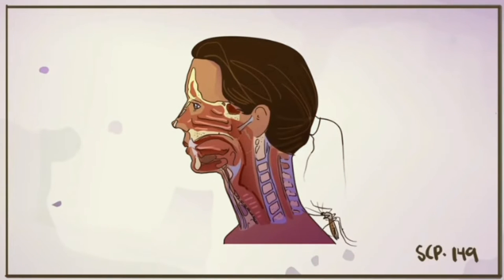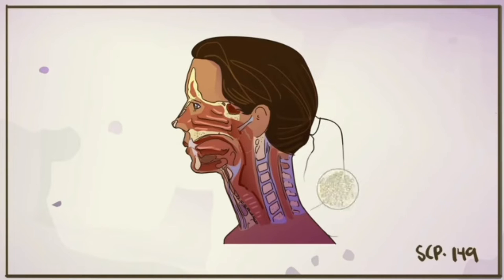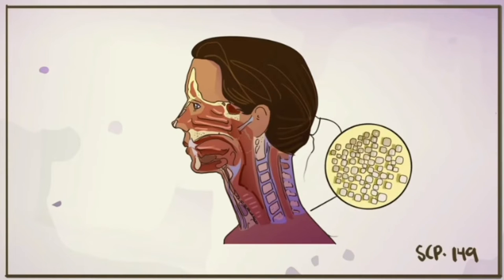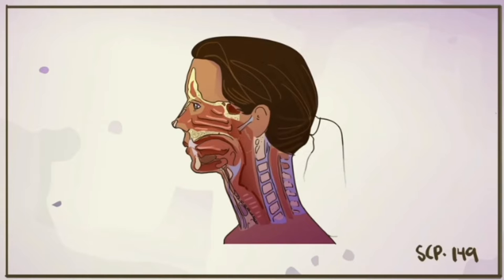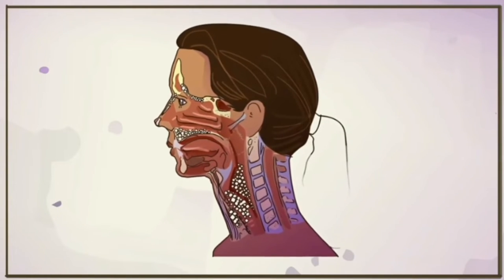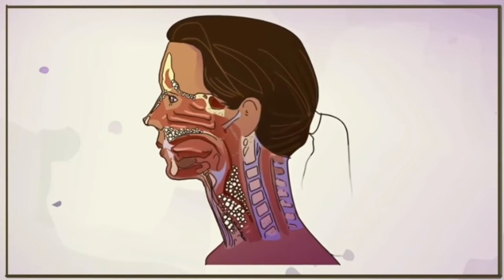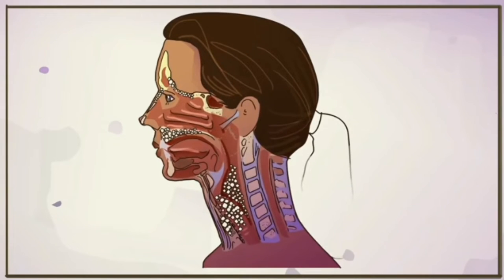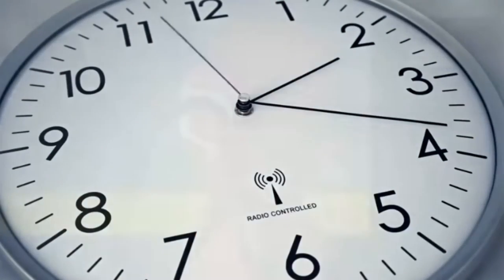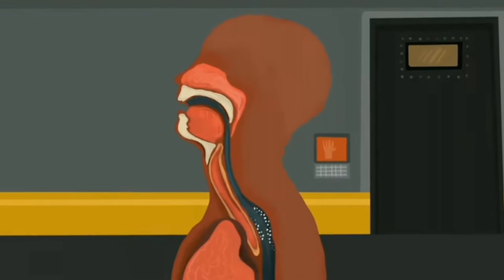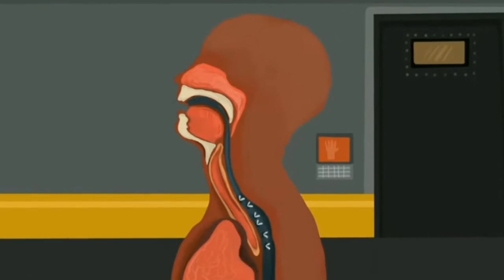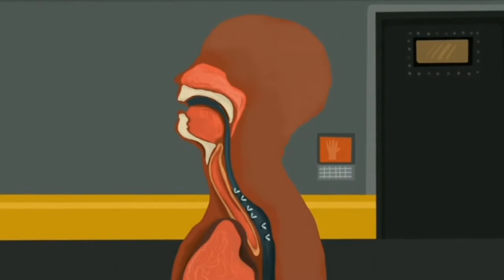The initial generation of cells grown from these altered instructions resemble cysts and are concentrated in the esophageal and sinus linings. These cysts, however, are shown to be filled with SCP-149 larvae upon dissection, with the cysts acting as a protective coating against external stimuli.